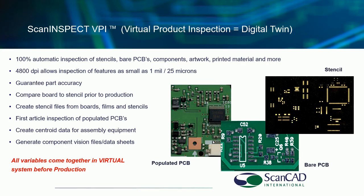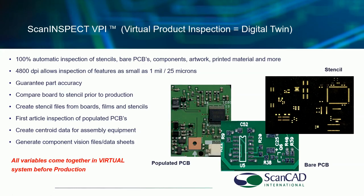Stencils and screens all have stretch over time, and you want to fail them before the stretch becomes a problem. The ScanInspect VPI system — Virtual Product Inspection — is really talking about the digital twin: our system marries the digital data you have for your parts against the actual part to make sure they match before you go into production. We can image the components, boards, stencils, screens, other tooling, carriers, pallets, and more — making sure everything is okay before you get anywhere near your production line. Our objective is to have the highest possible effectiveness and productivity of your production line.